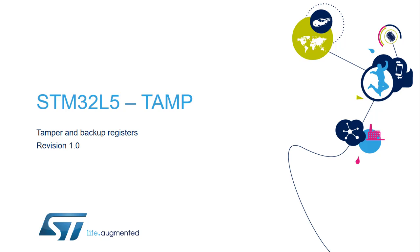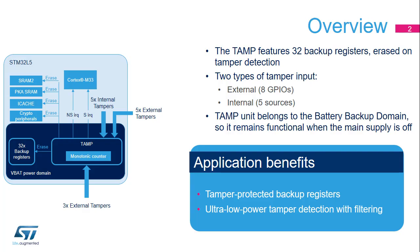Hello and welcome to this presentation of the STM32 tamper and backup registers. It covers the main features of this peripheral, which is used to provide security against tamper events. The TAMP peripheral features 32 32-bit backup registers used to preserve data when the main supply is off. These backup registers can be used to store sensitive data, as they are erased when a tamper event is detected on the tamper pins or due to some internal events.